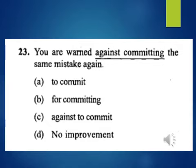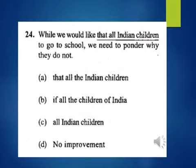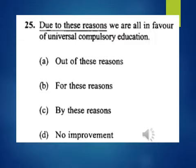Question 23: You are warned against committing the same mistake again. 'Against committing' is underlined. A, to commit; B, for committing; C, against to commit; D, no improvement. Question 24: While we would like that all Indian children to go to school, we need to ponder why they do not. 'That all Indian children' is underlined. A, that all the Indian children; B, if all the children of India; C, all Indian children; D, no improvement. Question 25: Due to these reasons, we are all in favor of universal compulsory education. 'Due to these reasons' is underlined. A, out of these reasons; B, for these reasons; C, by these reasons; D, no improvement.